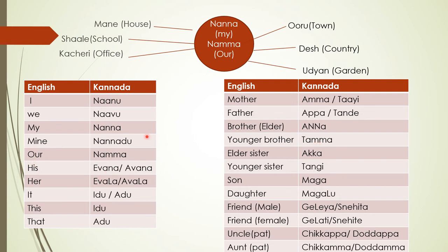Similarly, for 'his' we use 'ivana' or 'avana'. So: 'avana uru', 'ivana desha', 'avana udhyana', 'avana amma', 'avana appa'. You can take the entire list and make sentences. For 'her' we use 'avala' or 'ivala' depending on proximity: 'avala mane', 'ivala shale', 'avala kacheri', 'avala amma', 'avala appa'.